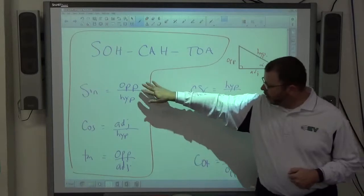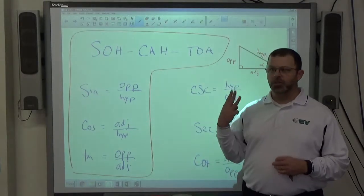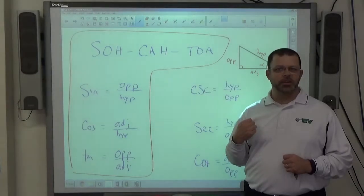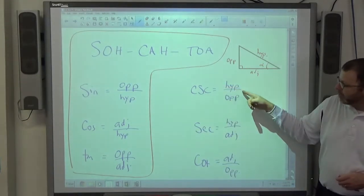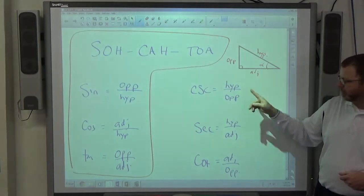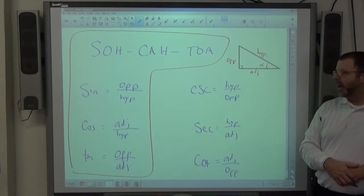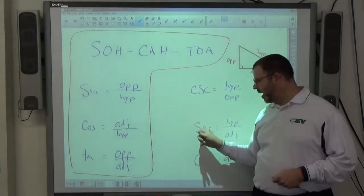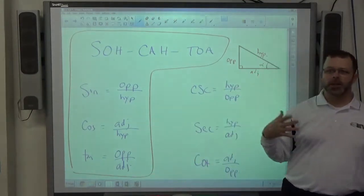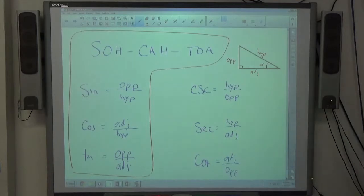The three ratios we got before were opposite over hypotenuse, adjacent over hypotenuse, opposite over adjacent. Those were three of the six ways to arrange these things. The other three are the reciprocals of each of these. The reciprocal of sine is cosecant. The reciprocal of cosine is secant. The reciprocal of tangent is cotangent. I don't know why they did co being the reciprocal of sine and not co being the reciprocal of cosine, but that's what they are. That's what your calculator would know.